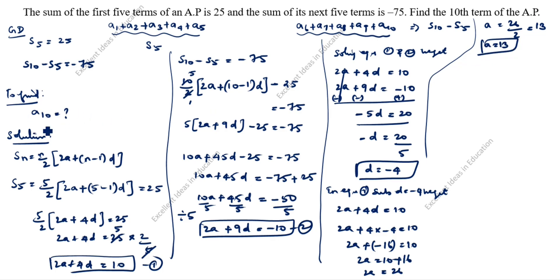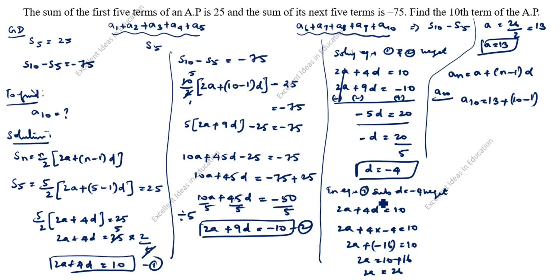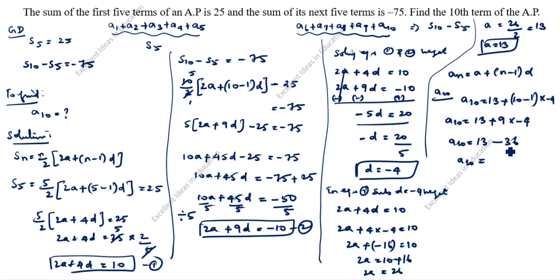Now we find A10. Using the nth term formula: A_n = A + (n−1)D. A10 = 13 + (10−1)(−4) = 13 + 9 × (−4) = 13 − 36 = minus 23. So A10 equals minus 23. This is the answer. This is the first method.